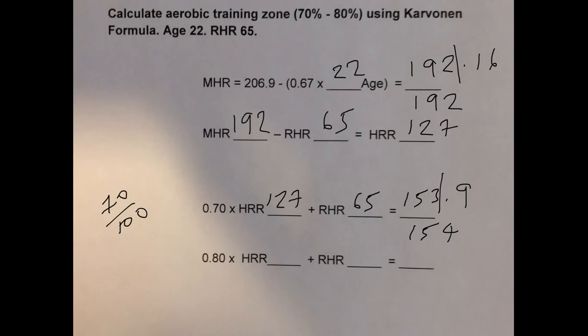And remember for the upper limit, 80% is the same as 80 over 100, which is 0.8 or 0.80. So 0.80 times the heart rate reserve of 127 plus the resting heart rate of 65 gives you an answer of 166.6, which we can round to 167.